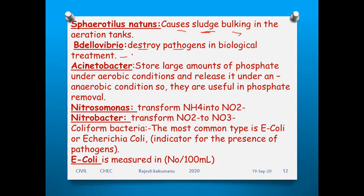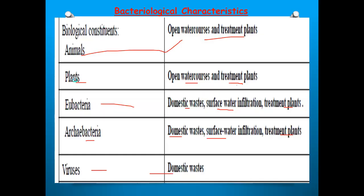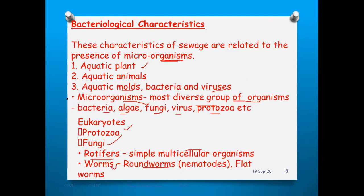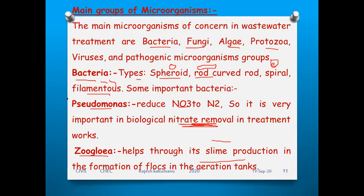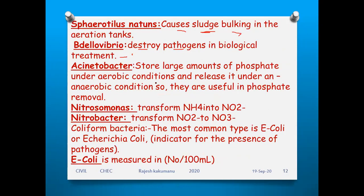Acinetobacter stores large amounts of phosphate under aerobic conditions and releases it under anaerobic conditions — useful in phosphate removal. Nitrosomonas transforms NH4 into nitrous oxide. Nitrobacter transforms NO2 to NO3. Coliform bacteria, the most common type being E. coli or Escherichia coli, indicates the presence of pathogens and shows how much amount of pathogens are located.